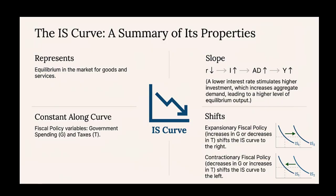A quick clarification: to define the curve, we're holding government spending constant. But consumption still changes. When the economy moves to a higher output level, that means higher income for people, and since consumption depends on disposable income, that higher output leads to more consumption, which reinforces the whole effect. The IS curve captures all of that. So it's the goods market's reaction to the cost of money.